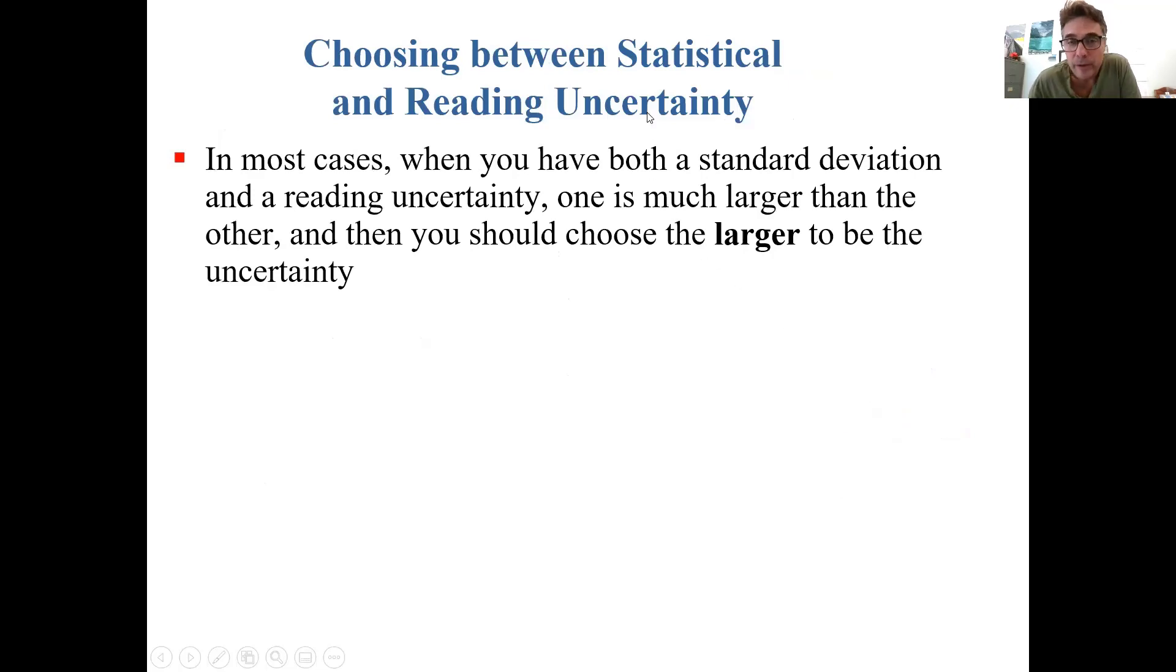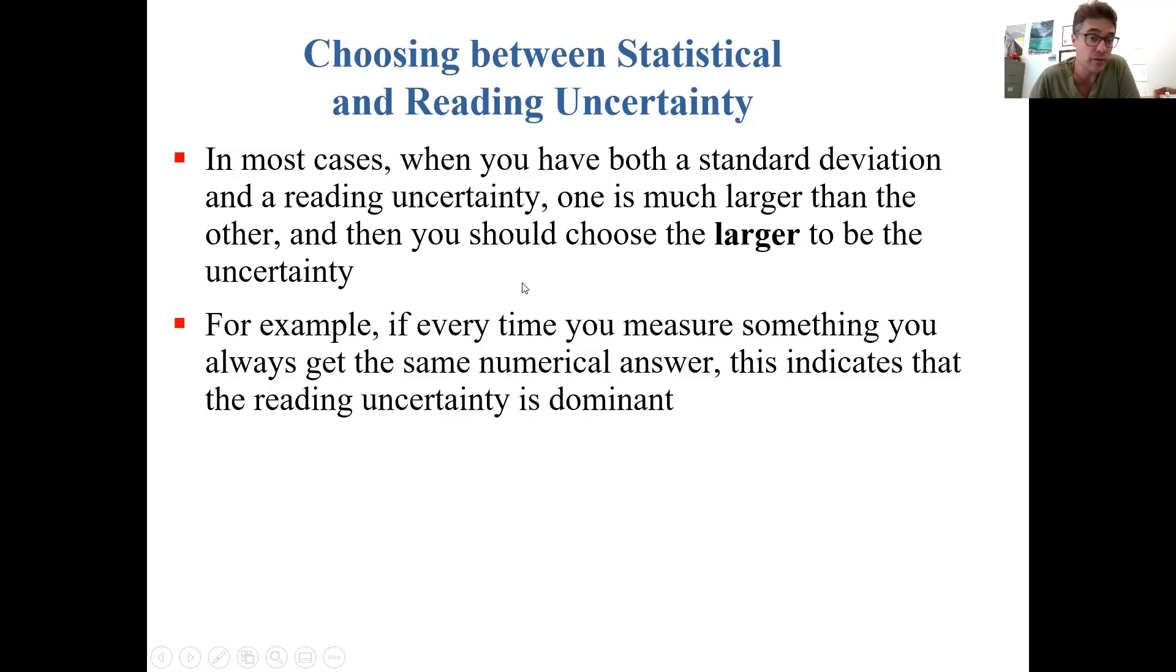We know about two kinds of uncertainty: statistical, which is where you find the standard deviation of a bunch of scattered measurements, and reading, which comes from just looking at how you made the measurement. In most cases, when you have both a standard deviation and a reading uncertainty, one will be much larger than the other, and you should choose the larger to be the uncertainty.